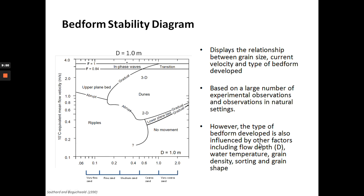The type of bedform developed is influenced by grain size, current velocity, and also other factors like flow depth, water temperature—in this case 10 degrees Celsius—density of the grains, sorting, and grain shape.